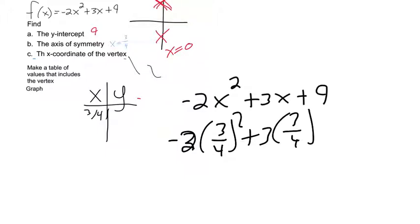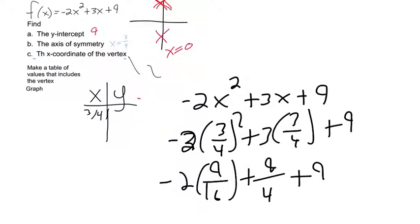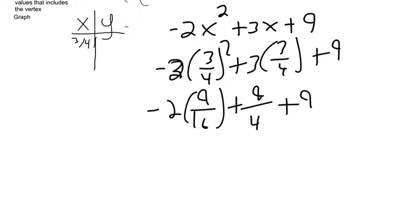And then I've got to just simplify that. If you're allowed to use a calculator, that might be a good idea, but 3 fourths squared gives you 9 sixteenths. And then you get plus 9 over 4 plus 9.